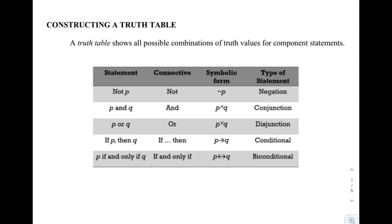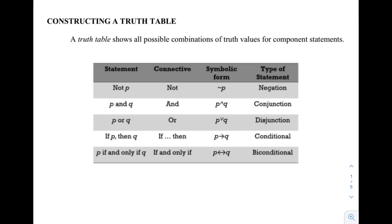Here are the logical connectives and symbols. For the statement 'not P', the connective is the word 'not', and we use the negation symbol. This type of statement is called negation. For the statement 'P and Q', the connective is the word 'and', and in symbol we use the wedge (∧). This type of statement is called conjunction.